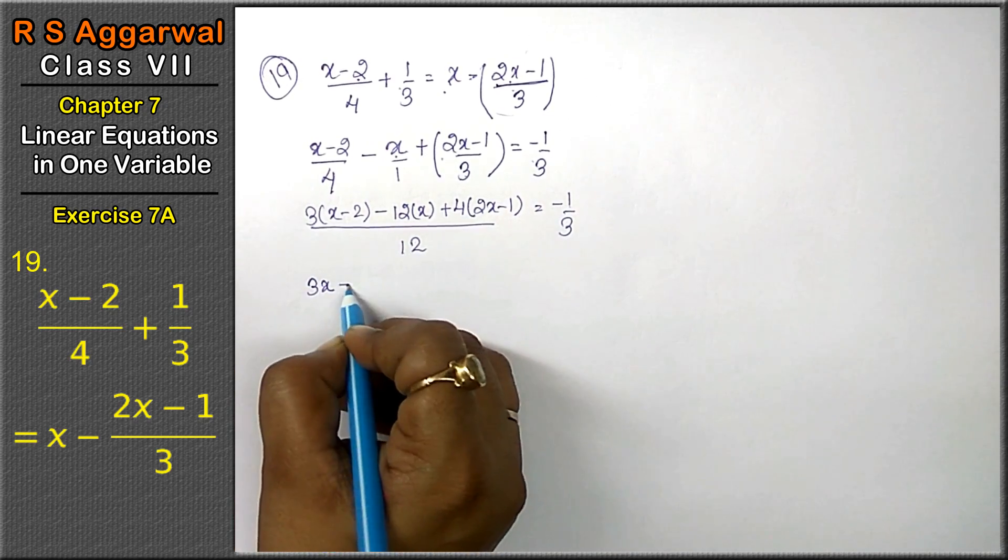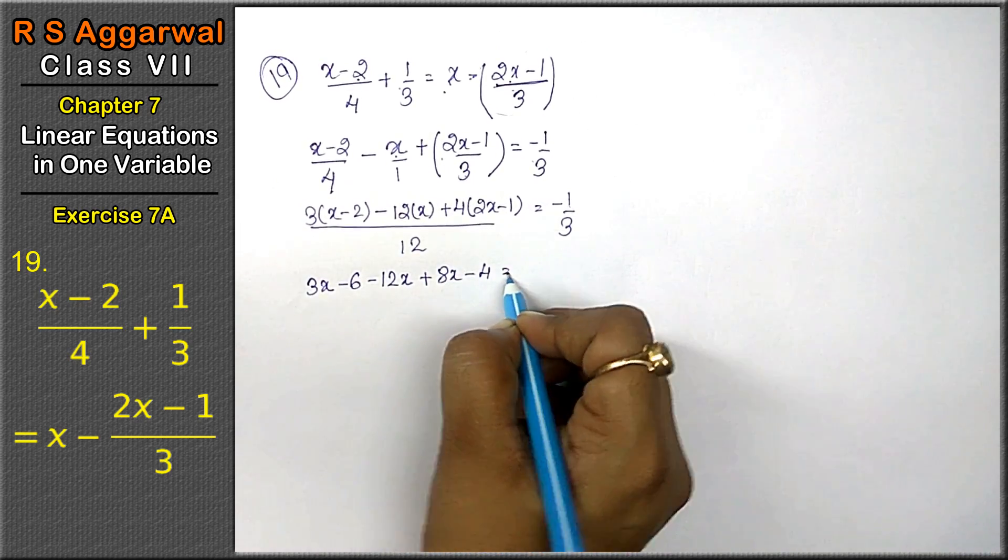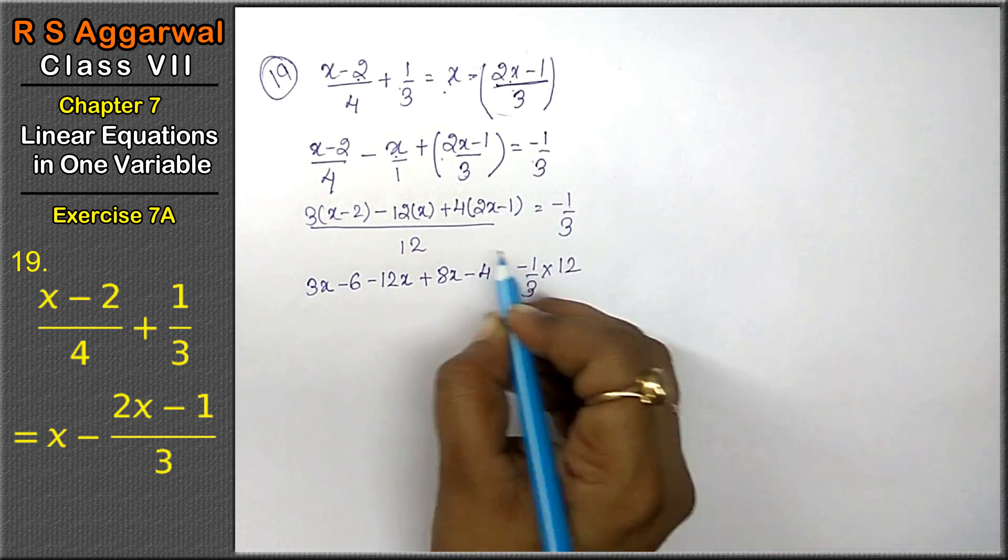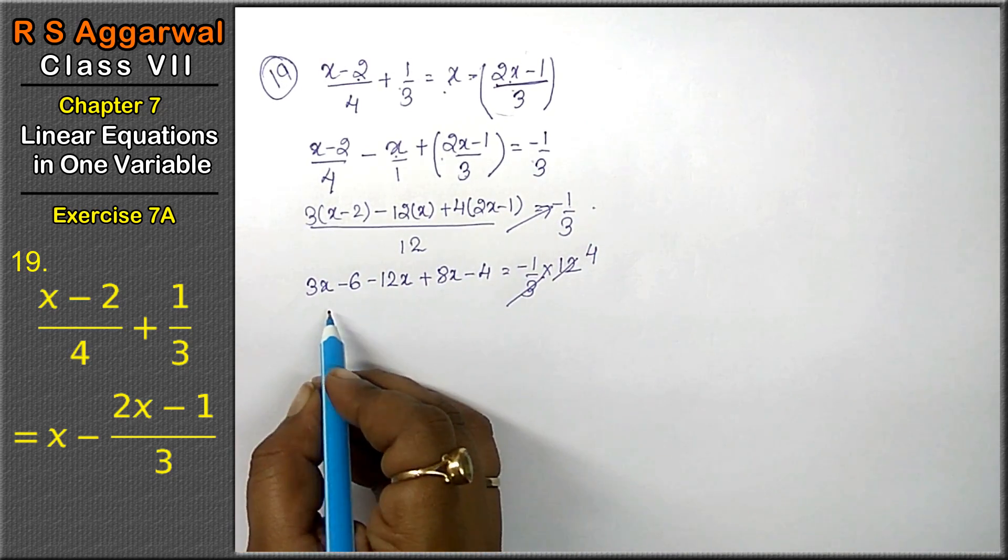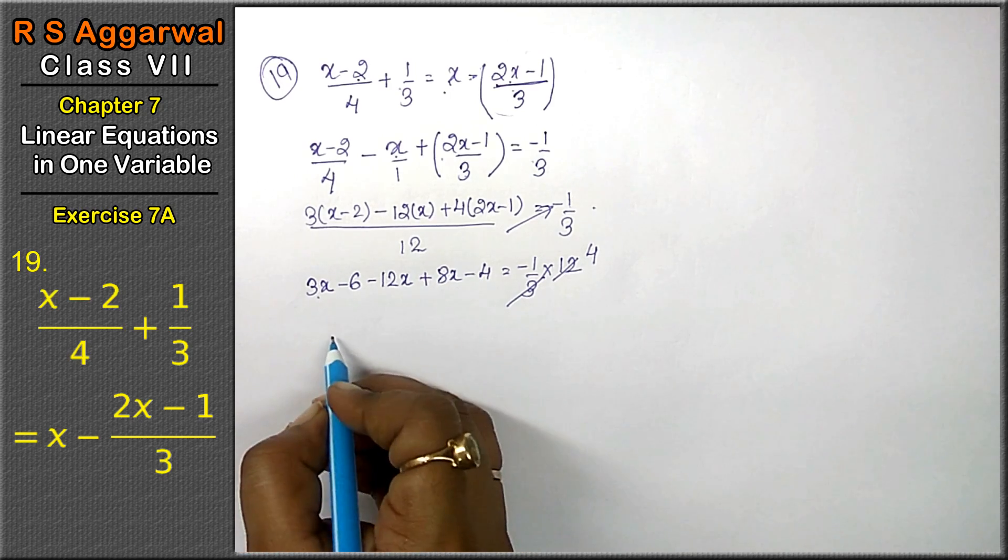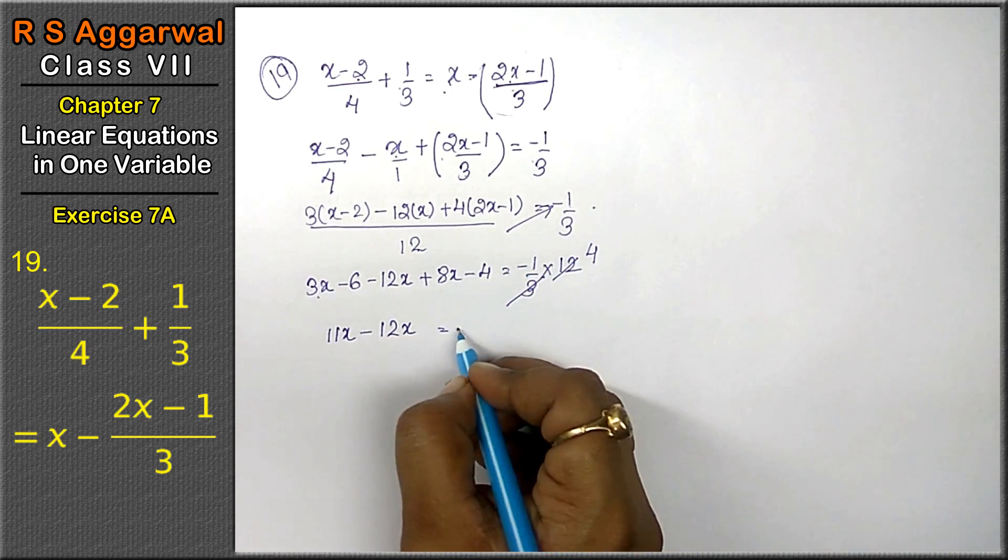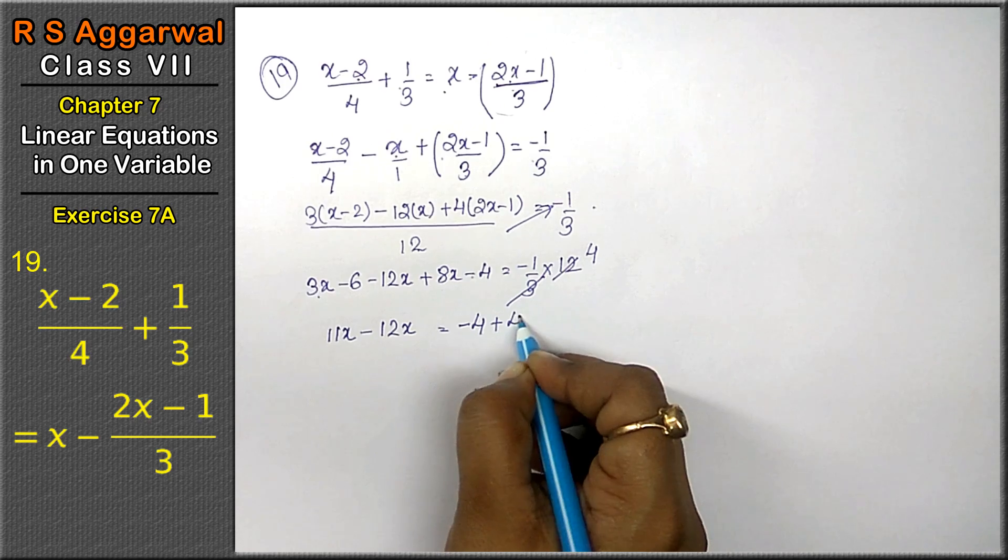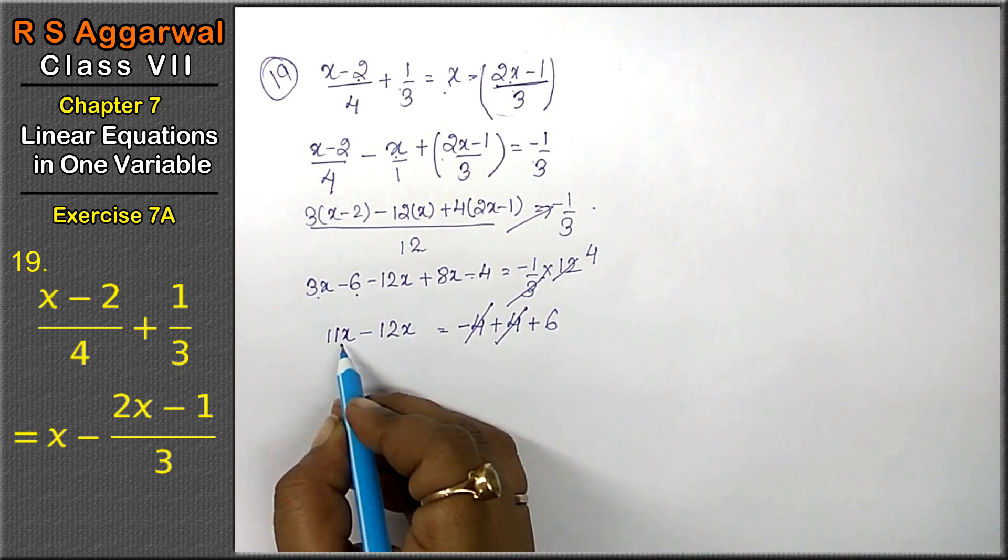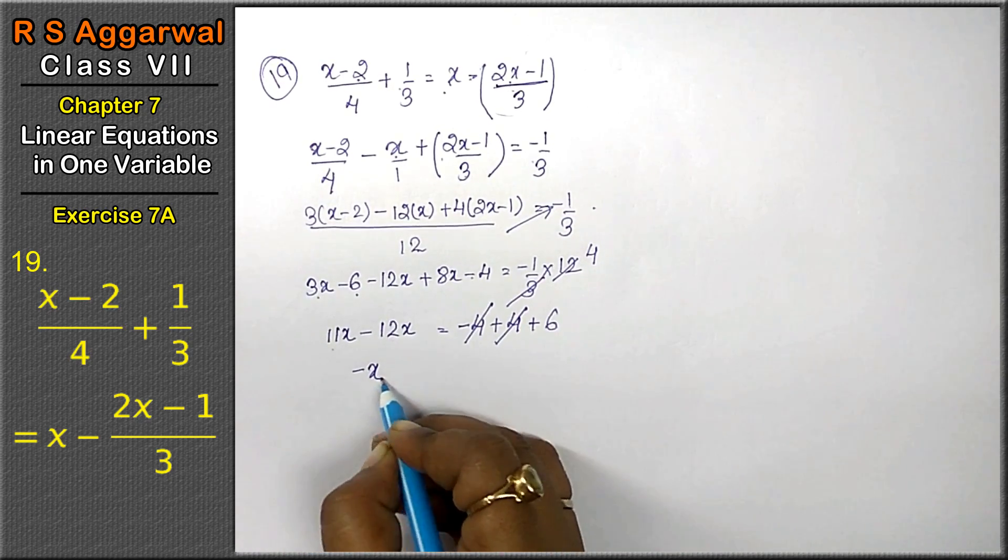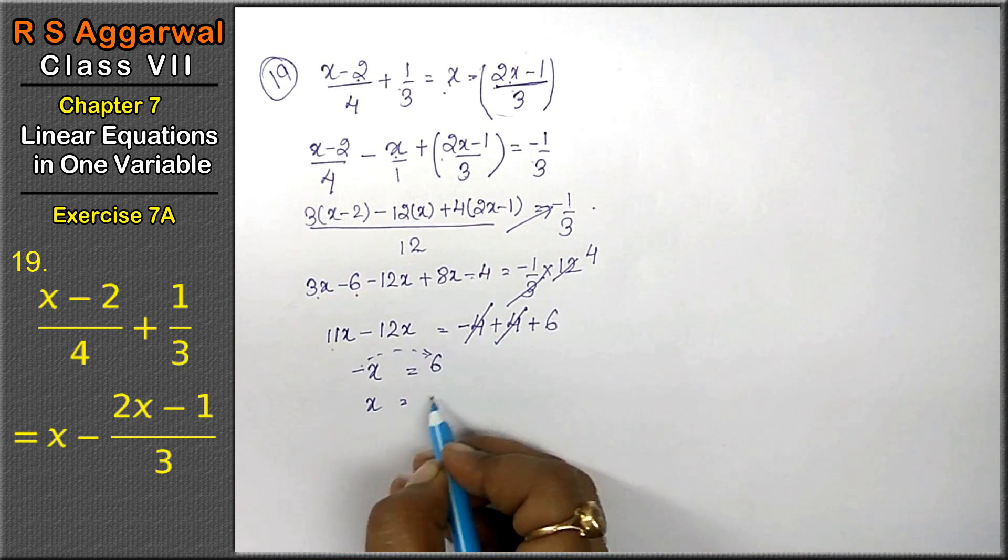Equals -1 upon 3 multiplied by 12. Now 3x + 8x is 11x minus 12x. So -x - 10 = -4. Therefore x = -6.